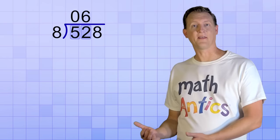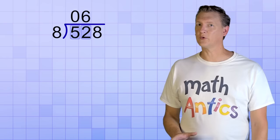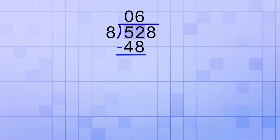If we wanted to, we could have put a 0 above that first digit, since the 8 wouldn't divide into it any times. And if that helps you keep track of which answer digit you're on, then that's a good idea. But it's not required. So, 6 times 8 equals 48. And then 52 minus 48 gives us a remainder of 4.